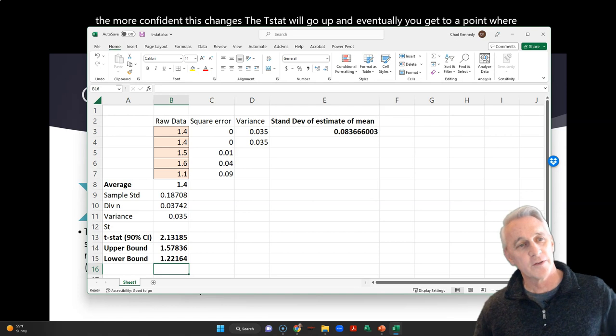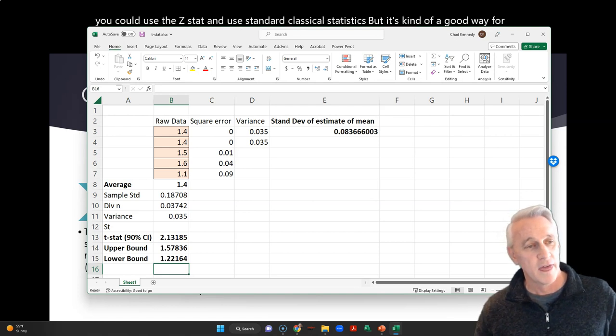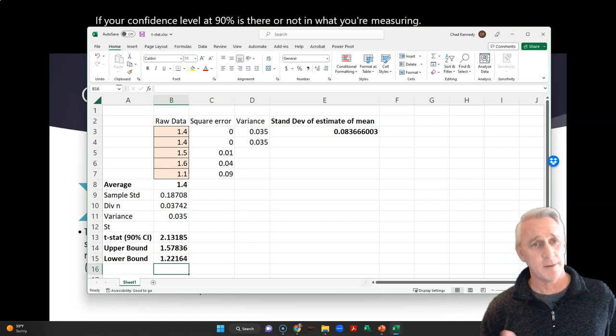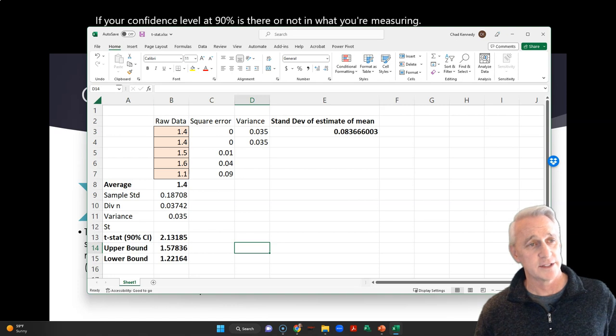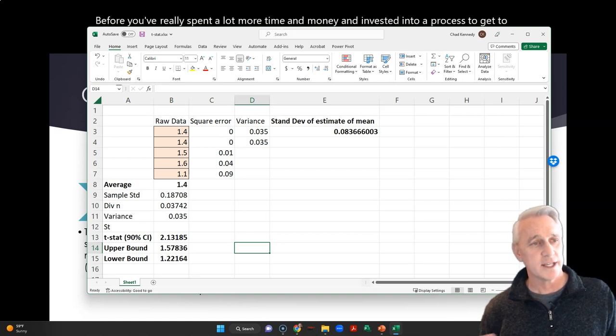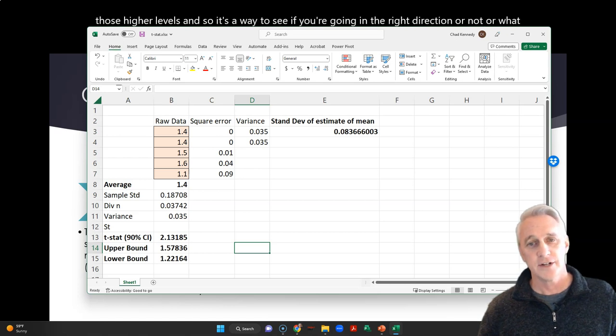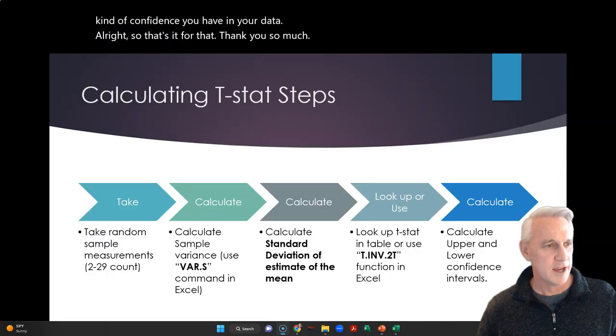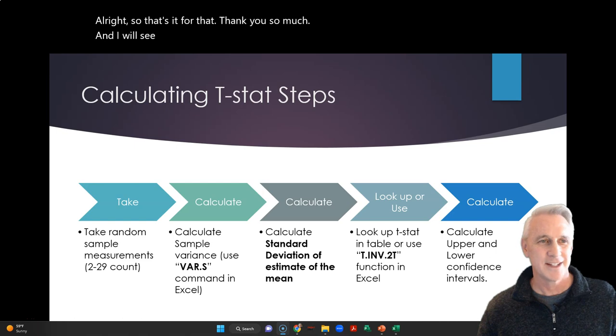But it's kind of a good way for you to know and give you some kind of idea if your confidence level at 90% is there or not in what you're measuring before you've really spent a lot more time and money and invested into a process to get to those higher levels. And so it's a way to see if you're going in the right direction or not, what kind of confidence you have in your data. All right. So that's it for that. Thank you so much. And I will see you in class. All right. Take care.